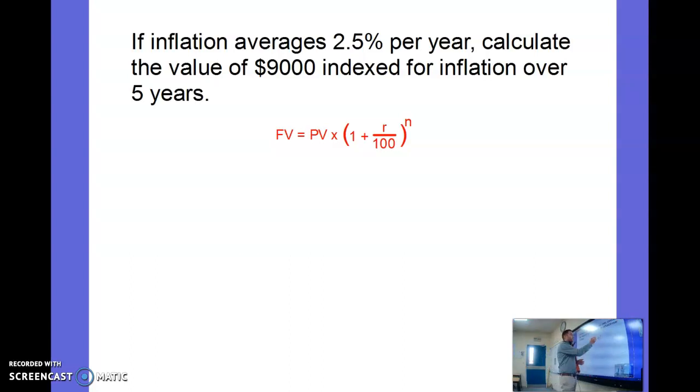We can just substitute, basically borrow from that formula, and our rate here is going to be our inflation rate instead of our interest rate. Our present value is going to be the amount that we are indexing. Let's put some numbers in: 9,000 × (1 + 2.5/100) because 2.5 is my rate of inflation. The 5 is the number of years.